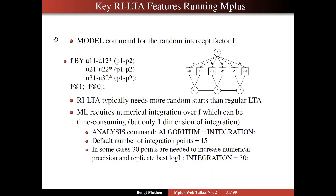In Mplus terms, you have a model command for the random intercept factor F, which looks like this: F measured by, in this case, two indicators. We free the loadings of those indicators so that we set the metric instead by fixing the factor variance to 1 and the factor mean to 0. That turns out to be the preferred metric setting. Those two loadings will be labeled P1 and P2 — that's lambda 1 and lambda 2. We want to hold them equal across time, so we have the same labels for the second and third time points.